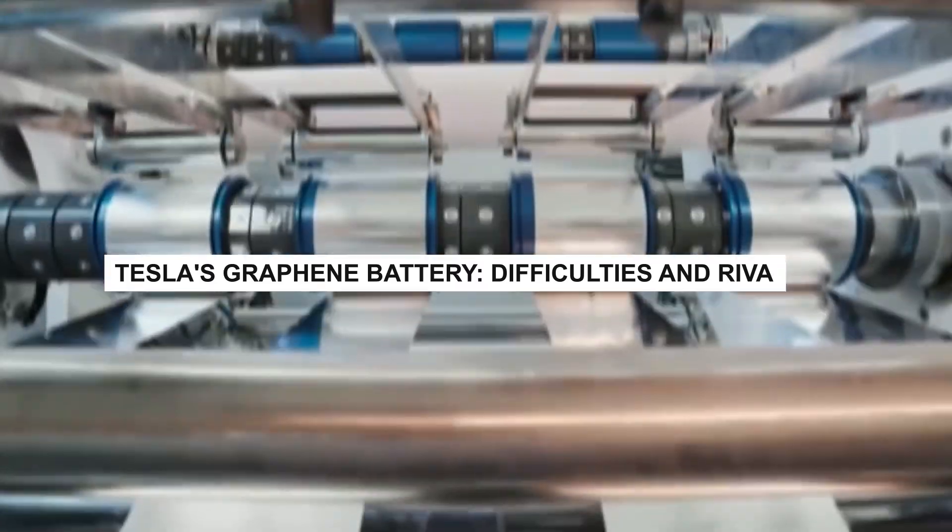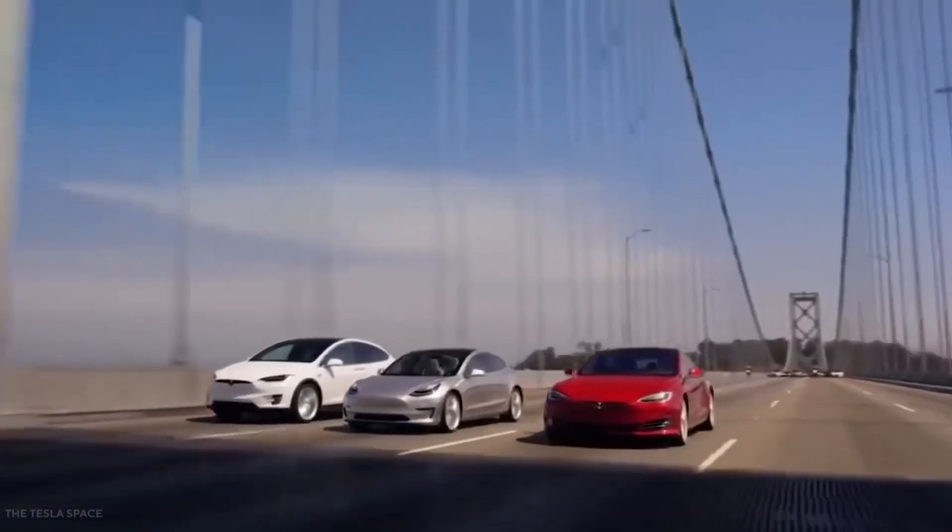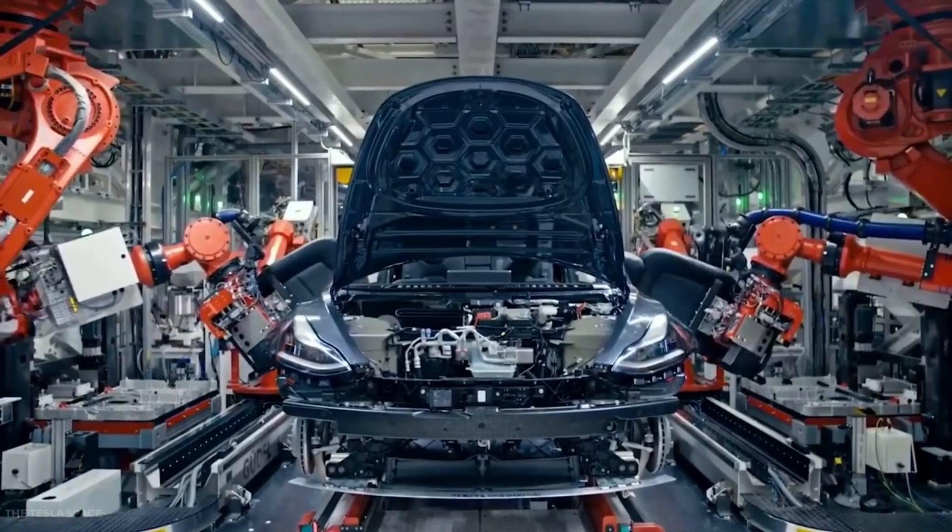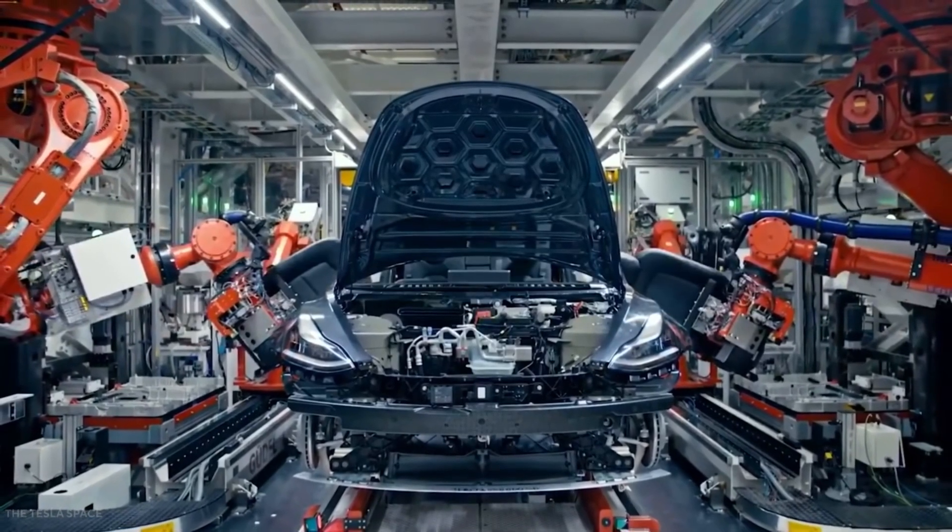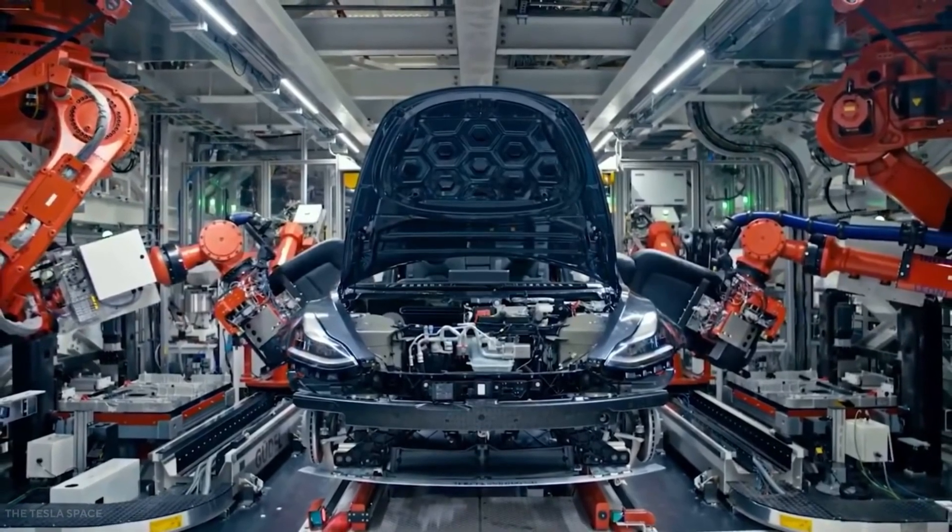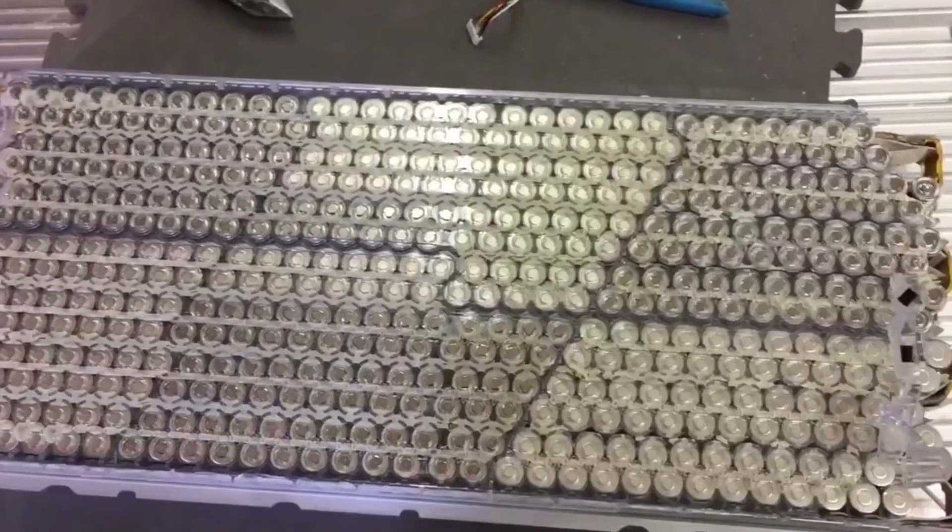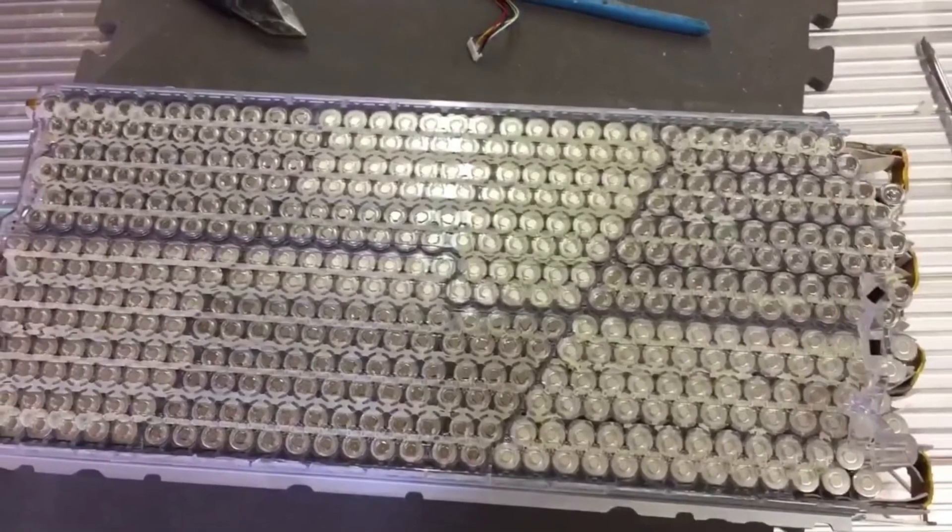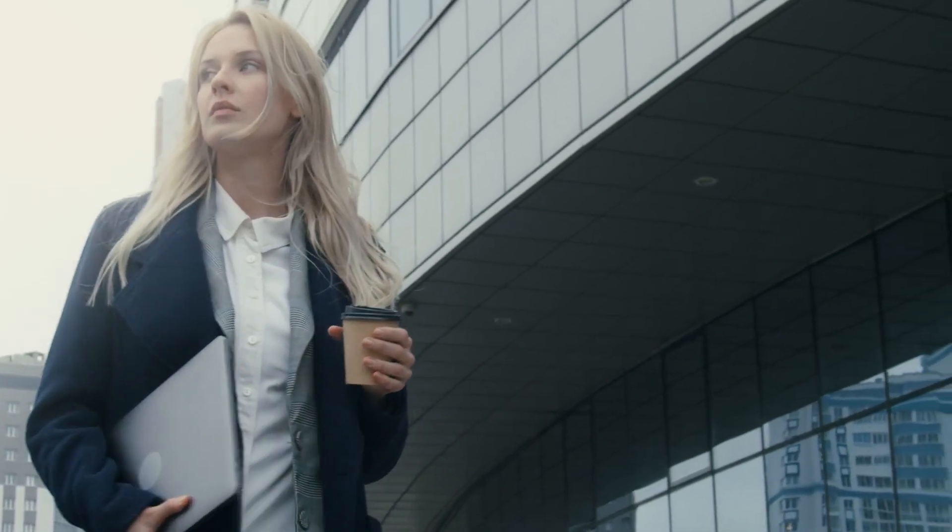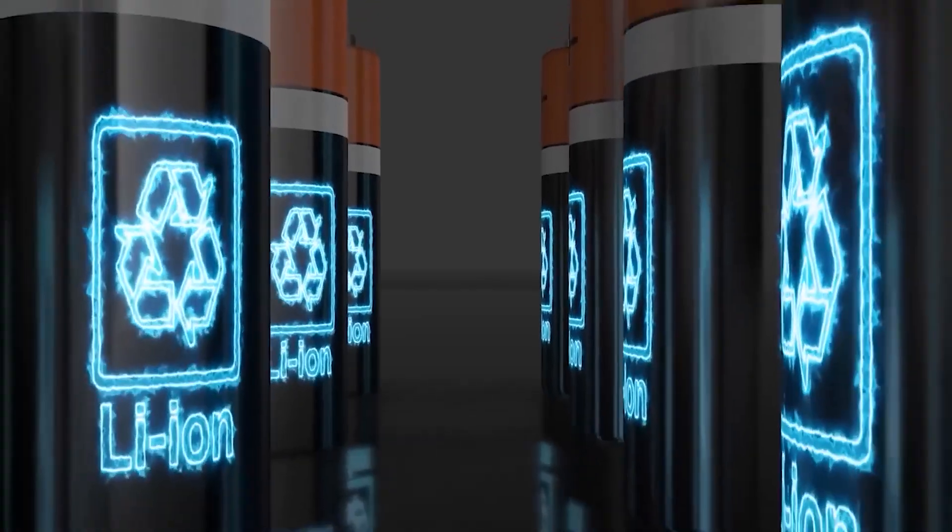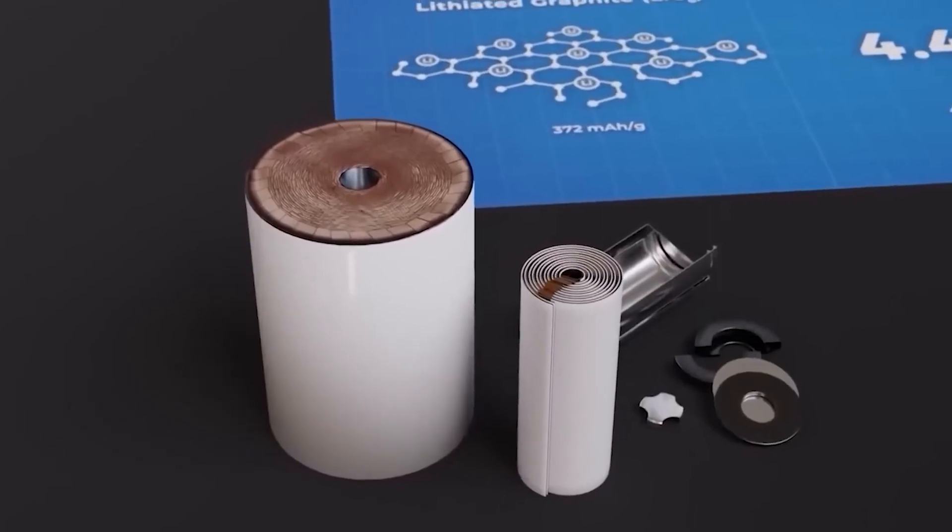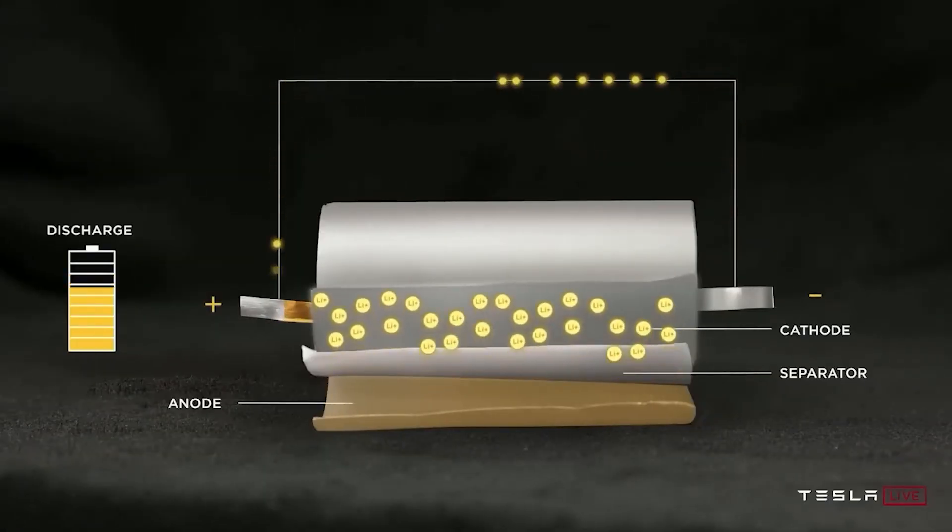Tesla's graphene battery, difficulties and rivalry. Naturally, there are barriers to making graphene materials for batteries commercially viable. The safety and durability of lithium batteries in EVs are impacted, among other things, by density issues. There are still problems with conductivity, which can eventually reduce the battery's overall capacity. That is the current state of affairs. Although a Tesla graphene battery is undoubtedly an intriguing concept, there has been no indication that the company is working on one at this time.